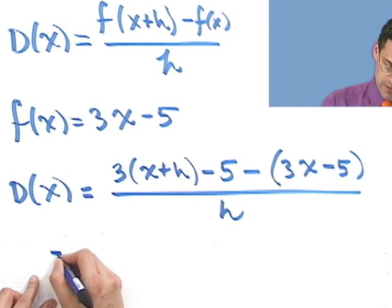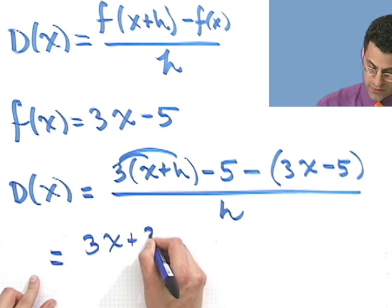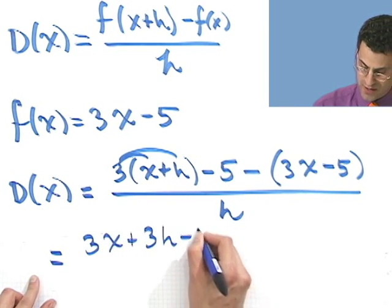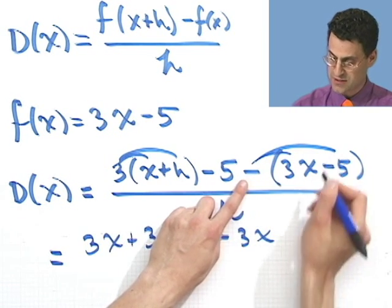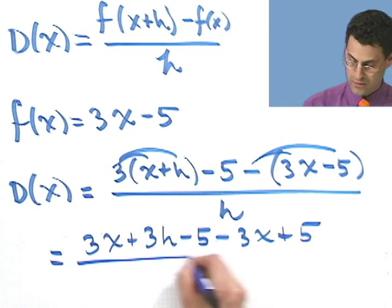And what does that equal? Well, if you simplify that, if I distribute, I would see 3x plus 3h minus 5 minus 3x. And if I distribute that negative sign—don't forget to distribute the negativity—I have plus 5 all over h.